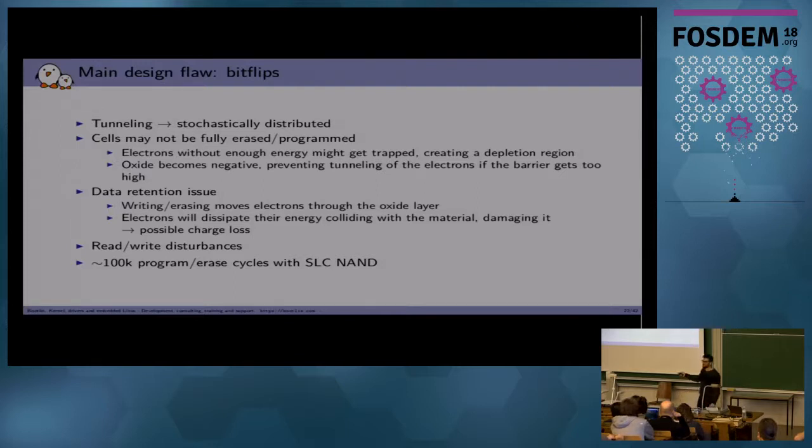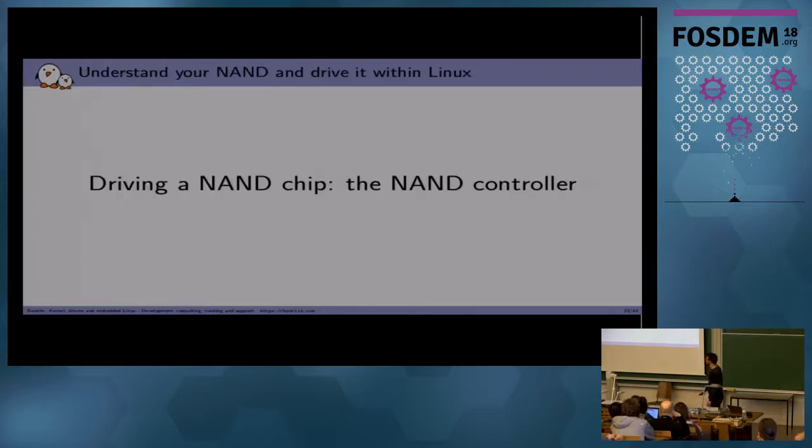And also, there are read-write disturbances. When you read on read pages, you apply voltages across the cells just next to other pages. And yeah, it creates disturbances. And for SLC NAND, it's about 100,000 program and erase cycles. For MLC, for instance, it's much less than that. I haven't talked about MLC. It's a multi-level cell when you put multiple bytes in one memory cell. But it's not very stable.